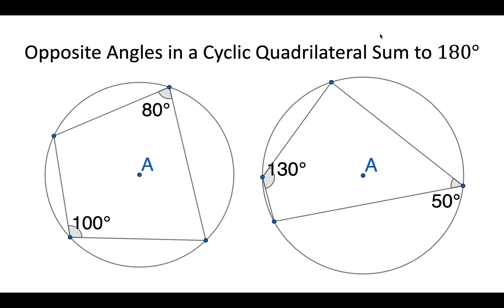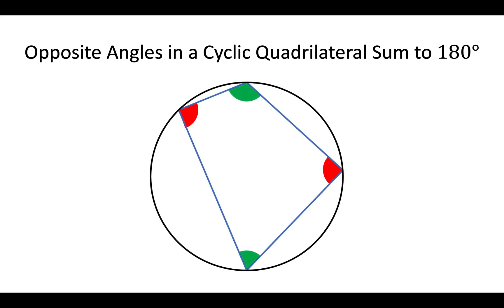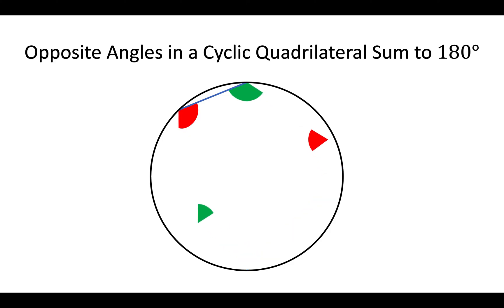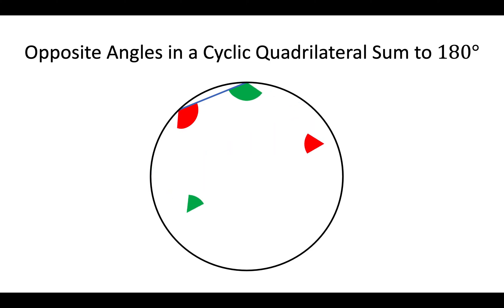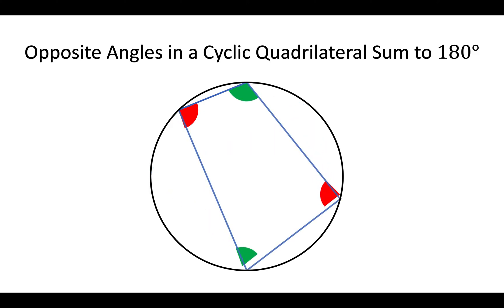'Sum' just means 'add up to.' So the red and the red add up to 180, the green and the green add up to 180. Red and red: 180. Green and green: 180.